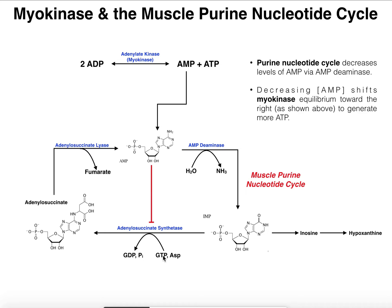It turns out that adenylosuccinate synthetase is an allosteric enzyme. Adenosine monophosphate actually allosterically inhibits adenylosuccinate synthetase, because in the pathway for AMP synthesis, adenylosuccinate synthetase is the committed step from IMP. So AMP can feed back and inhibit this enzyme. If this enzyme is inhibited, we still have AMP deaminase deaminating AMP into IMP, but the IMP will not sufficiently go back to adenylosuccinate because this enzyme is allosterically inhibited.